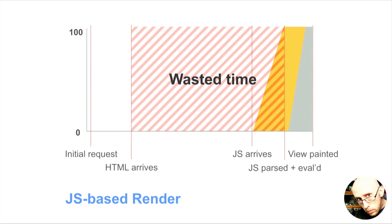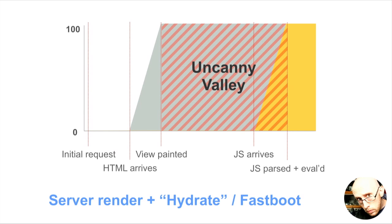Next, we're going to talk a little bit about universal rendering. Paul Lewis put up these really interesting graphs a few weeks ago. He said that in a JavaScript-based render, you're usually reliant on all of the script to be downloaded, parsed, and evaluated before you can render the page. This ends up wasting a lot of time between when the HTML arrives and when you give the user something meaningful on the screen.